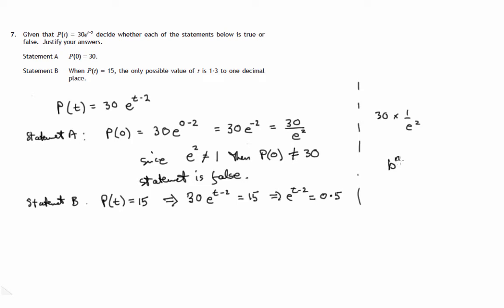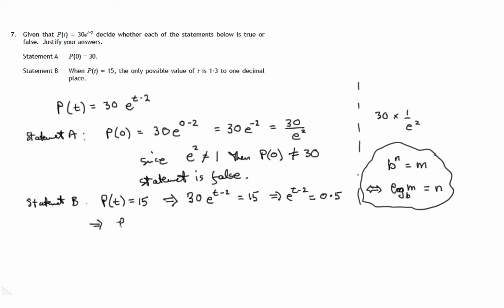Any power statement — for instance, b to the power n equals m — can be written as a log statement: log to the base b of m equals n. So the equivalent log statement here is that log to the base e of 0.5 equals t minus 2. Adding 2 to both sides, we get t equals log to the base e of 0.5 plus 2.